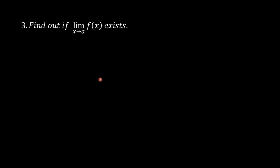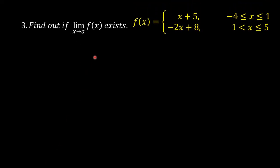Condition b: find out if the limit of f of x as x approaches 1 exists. We solve for the limit of f of x as x approaches 1 from the left, and then the limit of f of x as x approaches 1 from the right.